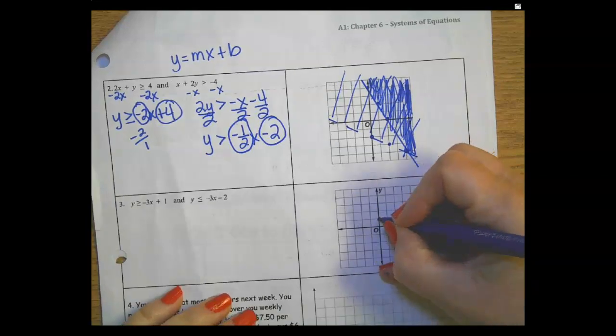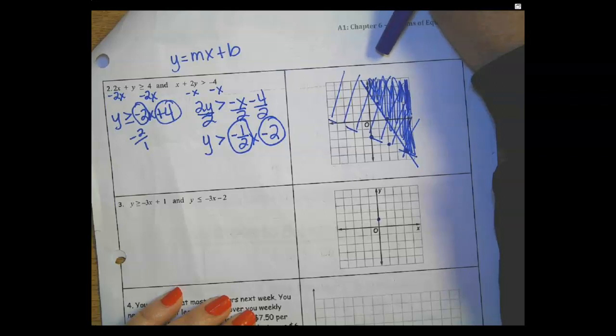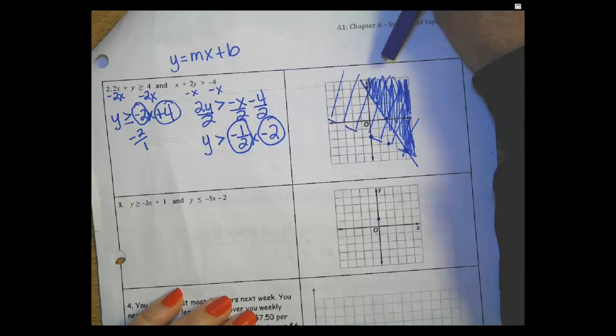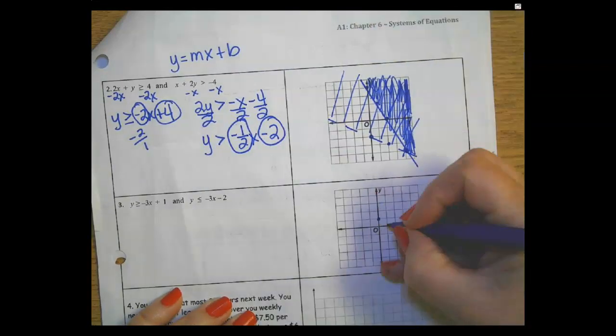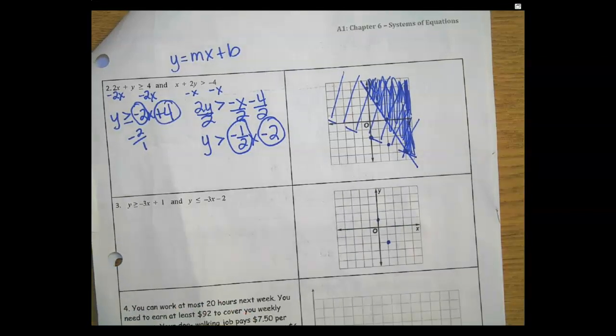So 0, 1. And what's another point it's going to? I'm going to follow this along until I get an actual point. 1, negative 2. So 1, negative 2.